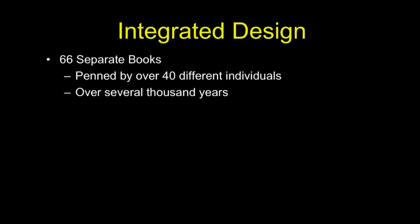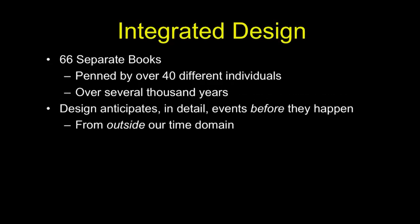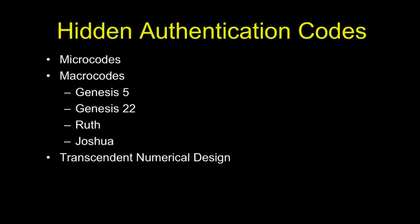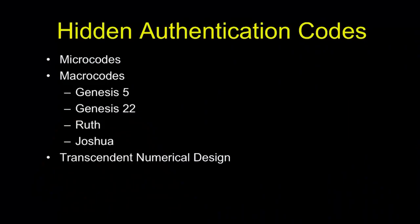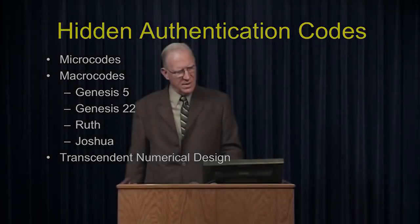The Scripture authenticates who Christ was. Then we can lean on the authentication by Christ of the Torah, of Daniel, in fact of the whole Old Testament. It's an integrated design — that's our apologetic, the one that's bulletproof. These 66 books penned by over 40 different authors across virtually 2,000 years is an integrated package that transcends the dimensionality of time itself. No other book on the planet earth does that. Their design anticipates in detail events before they happen, so the source of this message is obviously from outside our physical universe, outside our time domain.